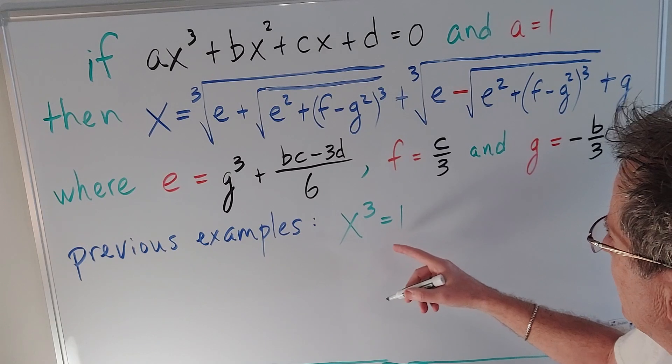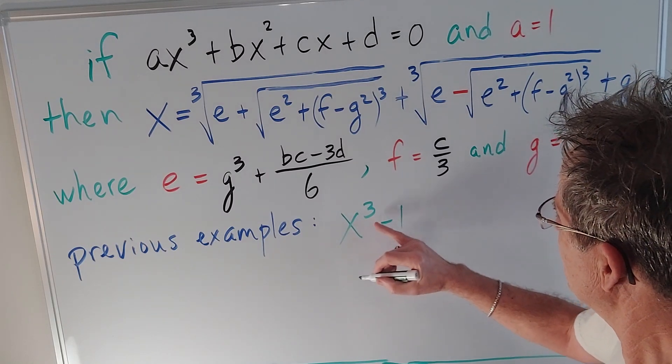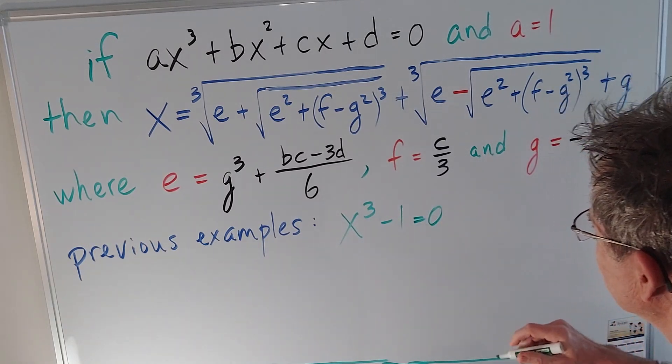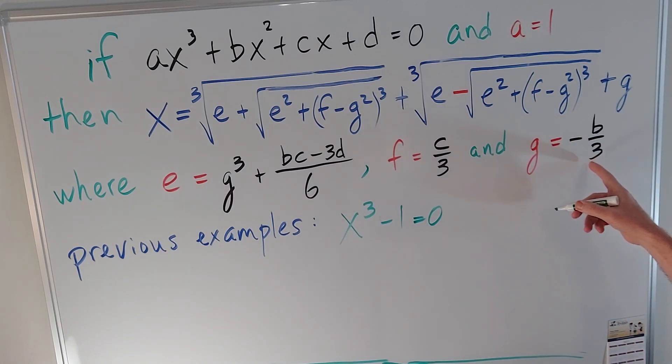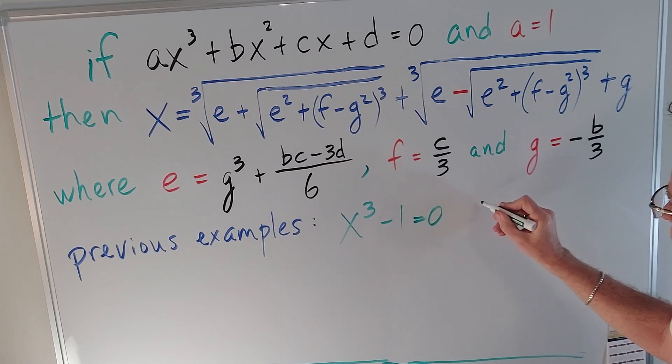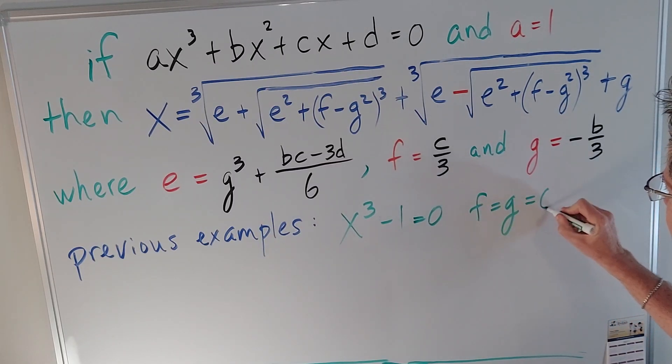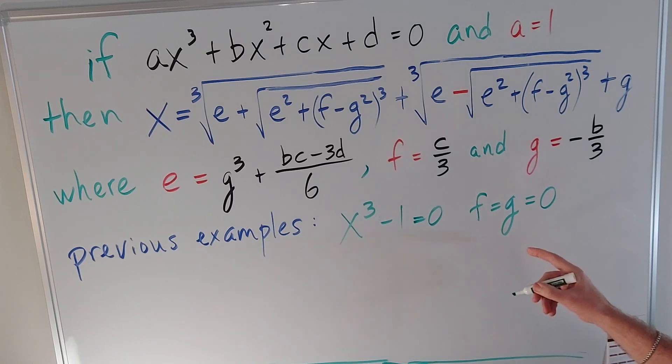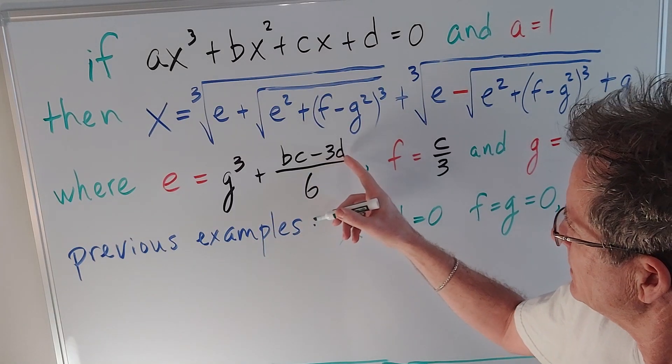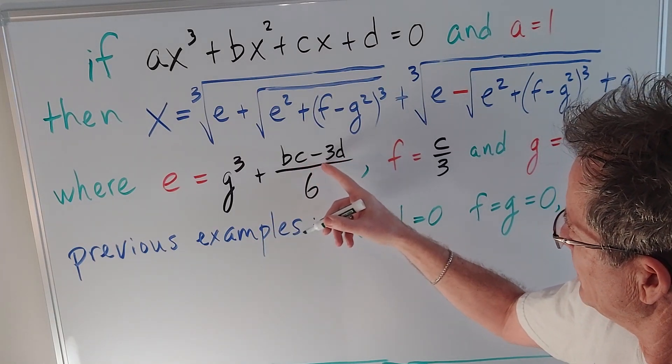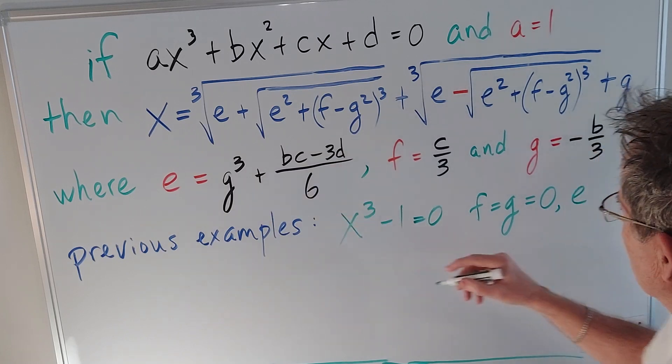In the formula x³ - 1 = 0, b is zero. So g is zero. c is zero. So f is zero. So f and g are both zero. And again I'm not swearing when I say f and g. But e is equal to 0 + 0 - 3(-1). So 3/6 is 1/2.